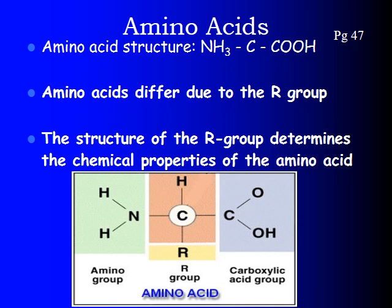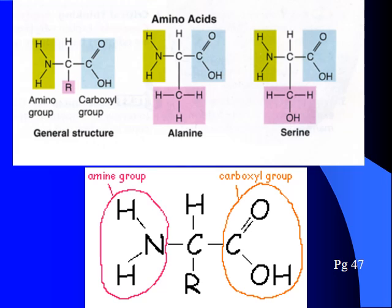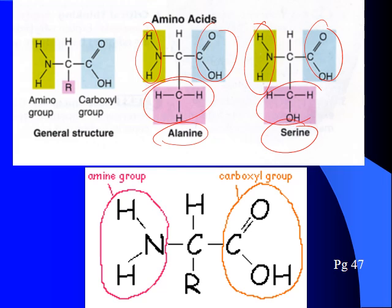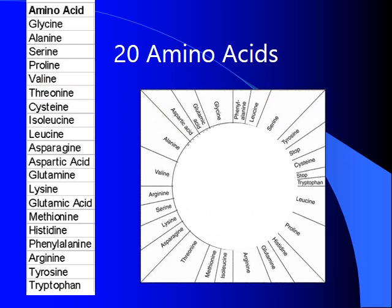The R group is the variable group that makes each amino acid different from another. The amino group and carboxyl group are the same across amino acids; the center is usually just a carbon with a hydrogen. It's the R group that changes things. For example, alanine and serine have the same amino group and carboxyl group — only their R groups differ. There are 20 different amino acids and almost all of them you'll have experience with.